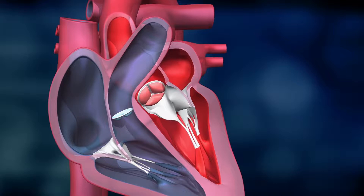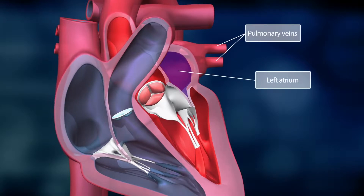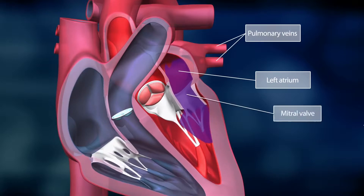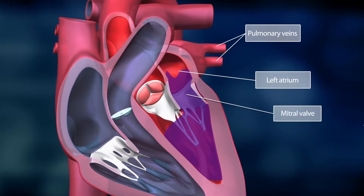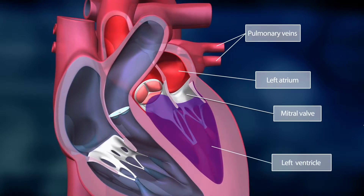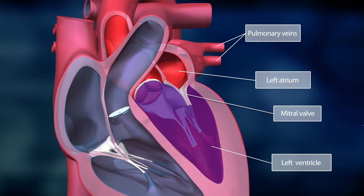Oxygen-enriched blood then returns from the lungs through the pulmonary veins and fills the heart's left atrium. The left atrium contracts. The mitral valve opens and blood is pumped into the left ventricle. As soon as the left ventricle is filled with blood, the mitral valve closes, preventing blood from flowing back into the left atrium.